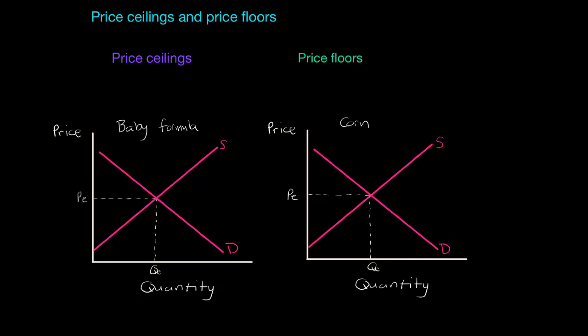Free markets, when left to their own devices, tend to achieve a state in which the quantity supplied by producers will be equal to the quantity demanded by consumers. This equilibrium state can be seen in both the markets for baby formula and the market for corn. But what happens when the government decides to intervene in the market and control the price of a good? In this video, we're going to talk about two different types of price controls — price ceilings and price floors — starting with definitions and then walking through the graph to show the effects of these two types of government intervention.